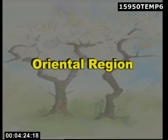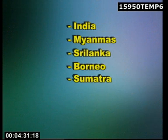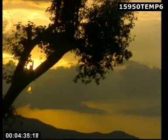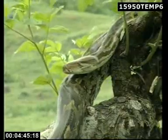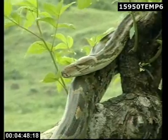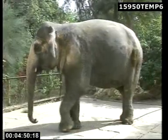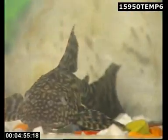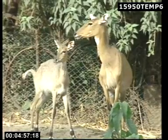Oriental Region. This includes India, Myanmar, Sri Lanka, Borneo, Sumatra, Java, Bali and some parts of China. It is mostly covered by monsoon climate. Important animals are: Gharial Crocodile, Snakes, Tortoise, Elephant, Rhesus Monkey, Tiger, Squirrel, Fishes, Nilgai and Bear.